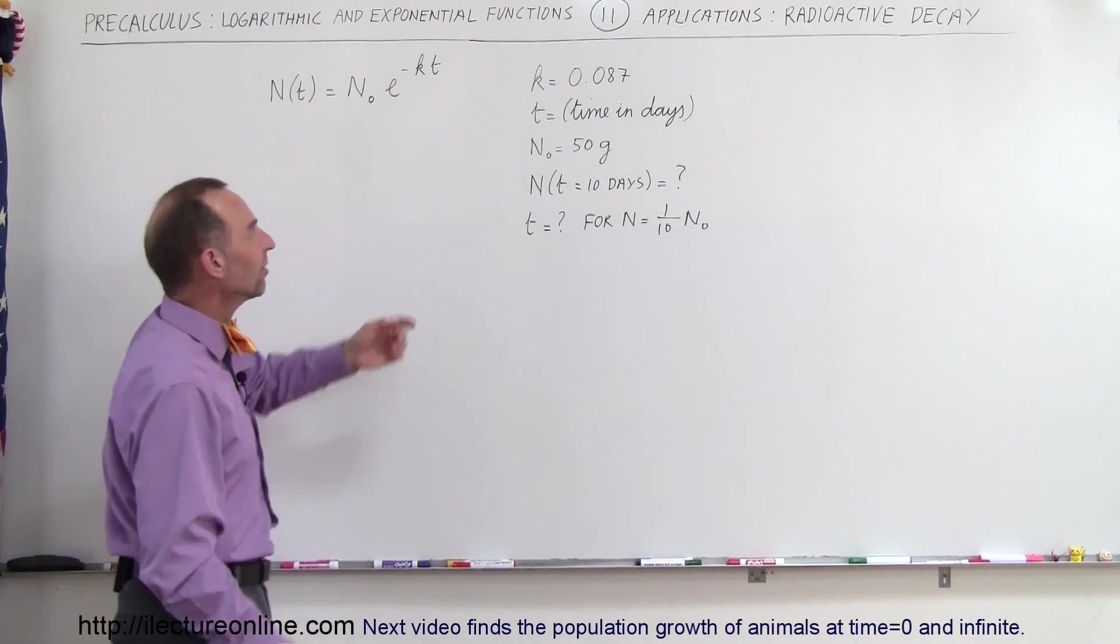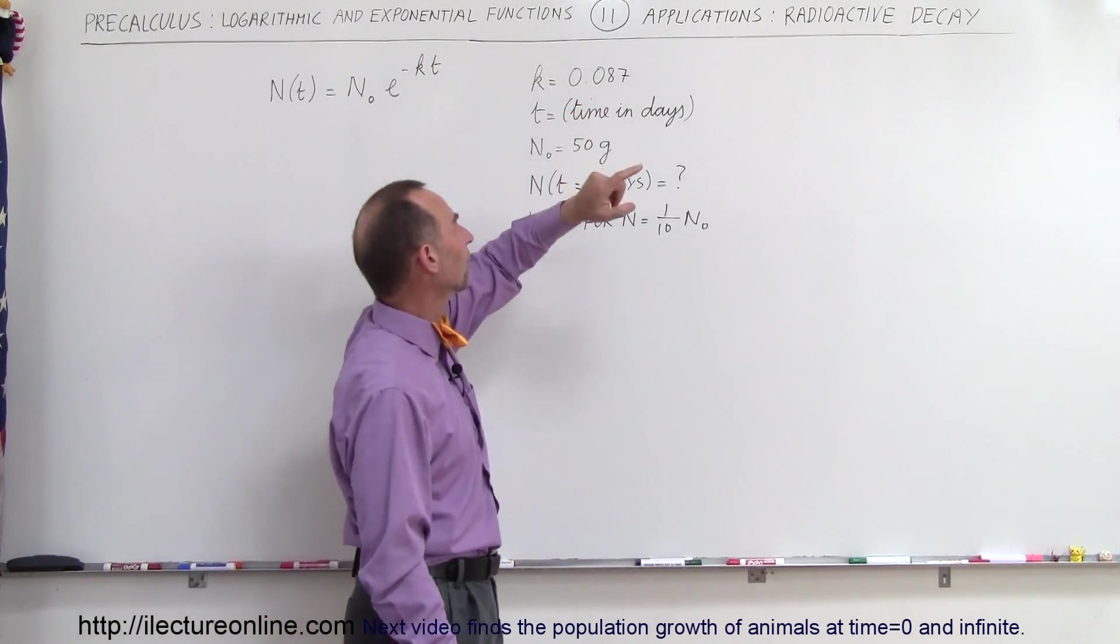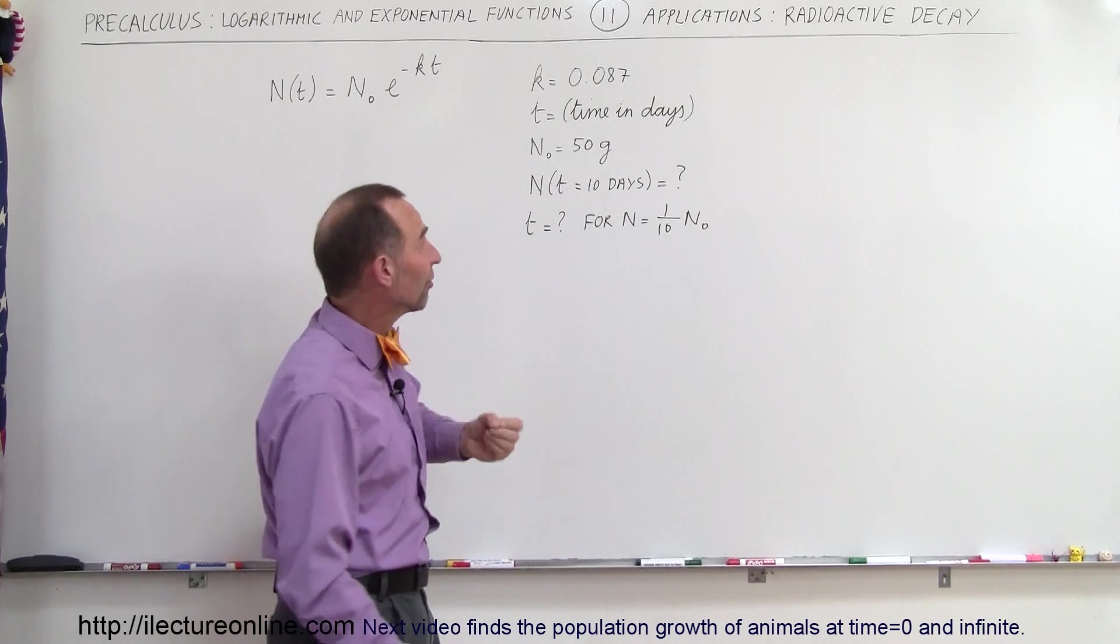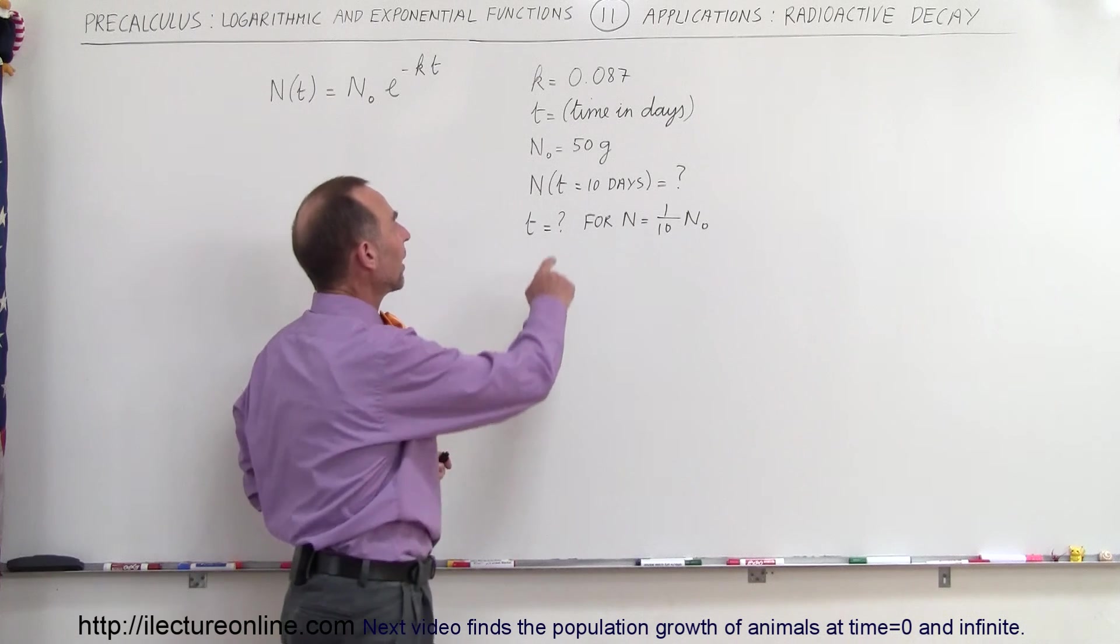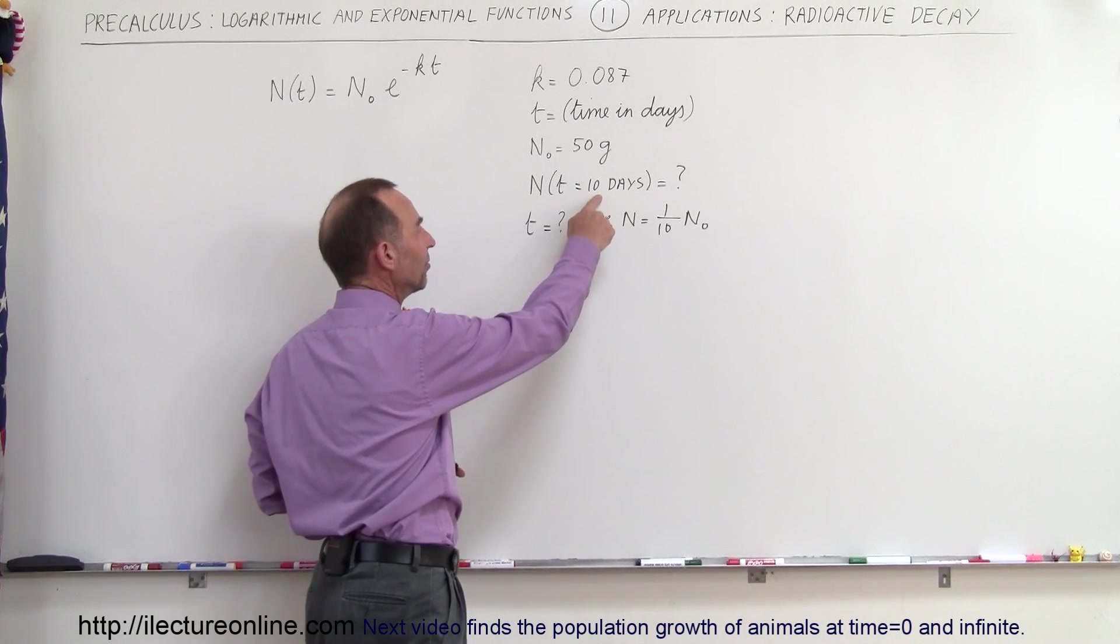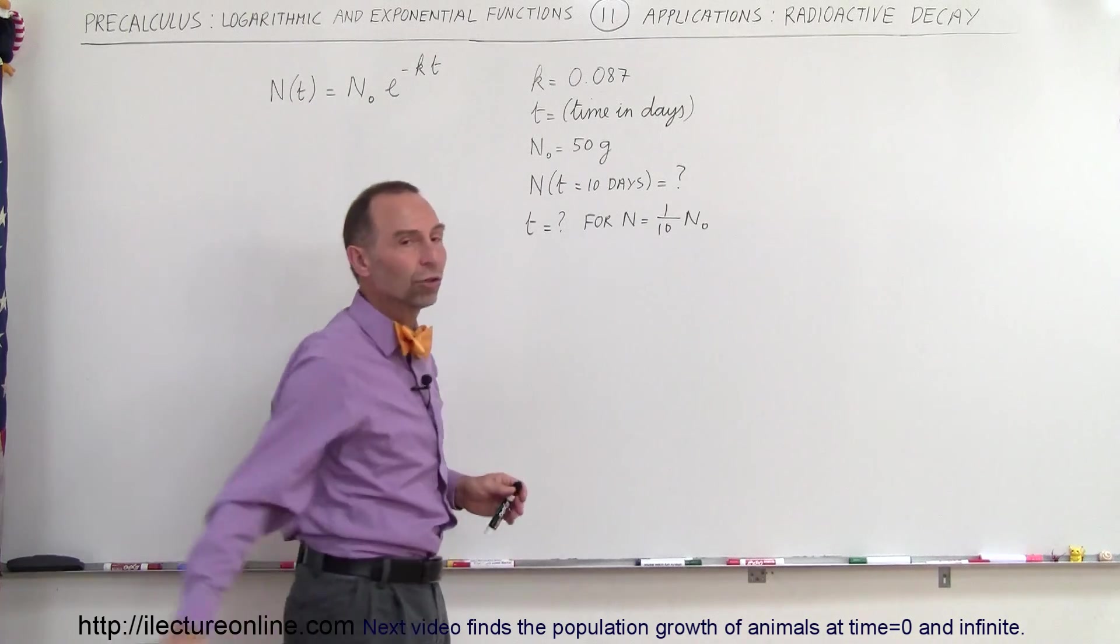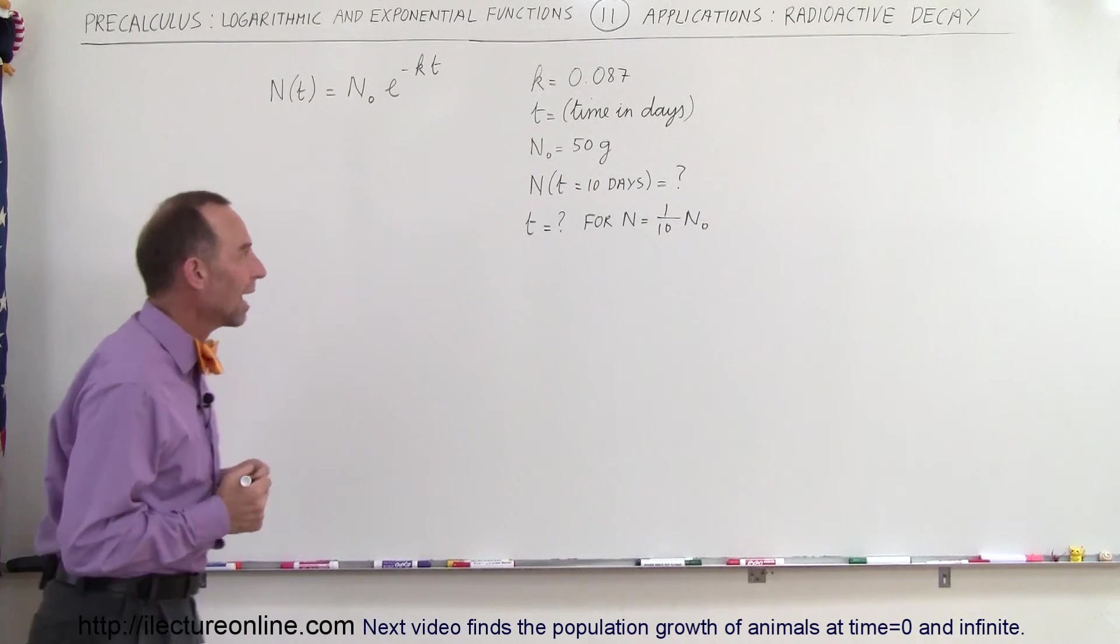So let's say in this case k is 0.087. The time will be in days, the initial amount that we start with is 50 grams, and we're supposed to find out how much we will have after 10 days, and how long it will take to end up with one tenth the original amount. So there's two questions here we're trying to answer.